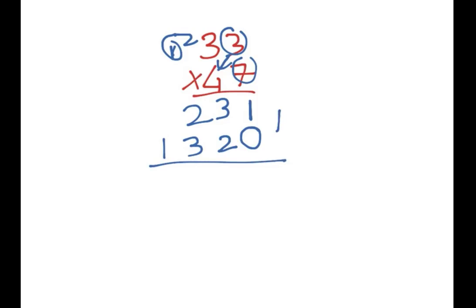And then we add it all together. My favourite bit. 1 plus 0 is 1. 3 plus 2 is 5. 2 plus 3 is 5. And we have a 1 here again. And that's it.